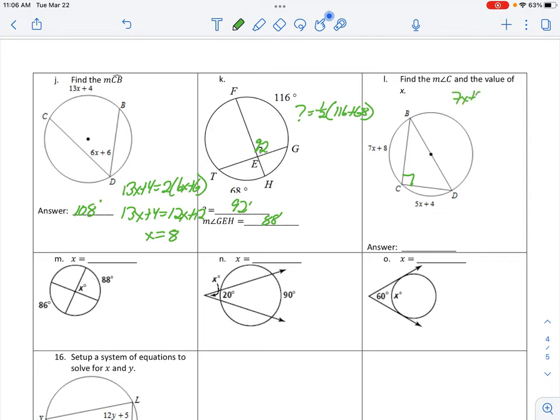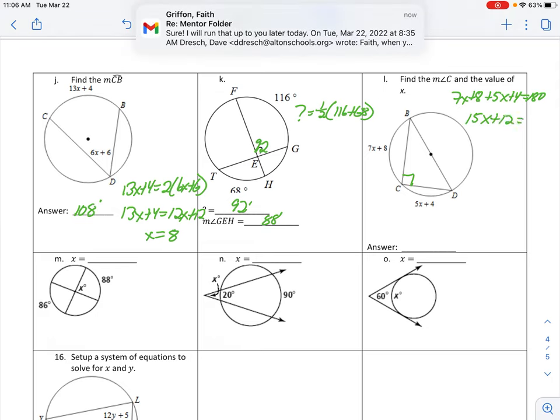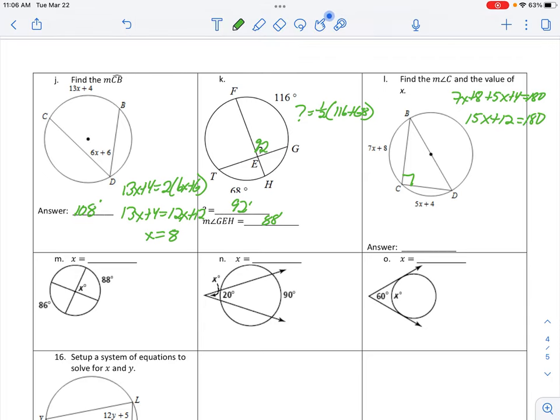Well, because that's part of a semicircle. So 7X plus 8 plus 5X plus 4 has to give me 180 because it's a semicircle. Those two arcs. 15X plus 12. 180 minus 12 divided by 15. 7 plus 8. Is that not nice? Hmm. Oh, wait. It's 7X plus 5. 7 plus 5 is 12X. My bad. So let me try that again. Still 180 minus 12. And divide that by 12. X is 14.